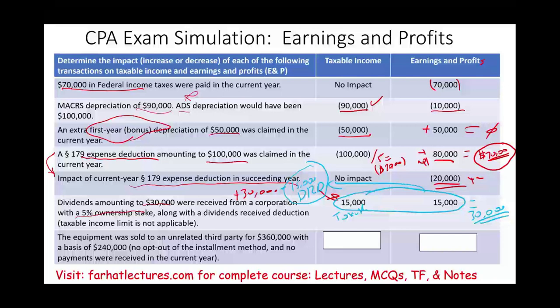Equipment was sold to an unrelated party for $360,000 with a basis of $240,000. The taxpayer did not opt out of the installment method and no payments were received in the current year. For taxable income, there is no impact because under the installment method you are only taxed when money is received. For earnings and profit, regardless of when payment is received, you must include the full profit — $360,000 minus $240,000 equals $120,000 added to E&P.